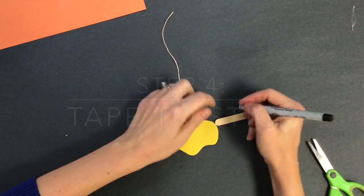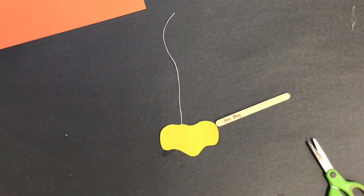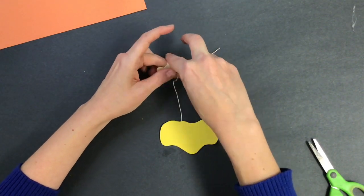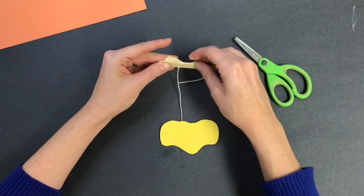Step number four, attach it to a stick. I wrote my name on the stick before I began, and then I'm going to tape it to the stick. You'll see here in a moment that my string is a little bit long, so I used scissors to cut it because I wanted it a little bit shorter.